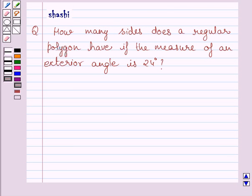Hi and welcome to the session. Let us discuss the following question. How many sides does a regular polygon have if the measure of an exterior angle is 24 degrees?